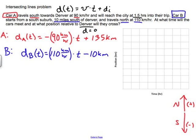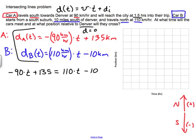In order to figure out what time the cars are going to cross, I need to understand that when they cross they'll share the same position and the same time. So I'll set the two equations equal to each other. Leaving out the units to keep things clean: −90T + 135 = 110T − 10. I'll group like terms by moving −90T to the right and −10 to the left, giving 145 = 200T.